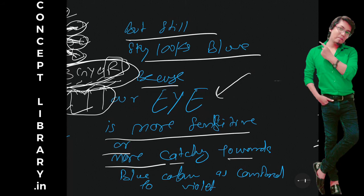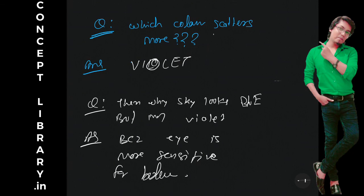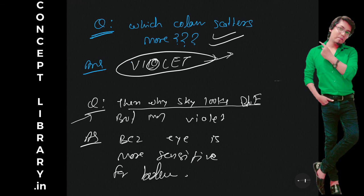Okay, so we have a question here: which color scatters more? No doubt violet. If violet is scattering more then why our sky looks blue? That is next question. So answer is because eye is more sensitive for blue color. I hope you are very clear with this, thank you.